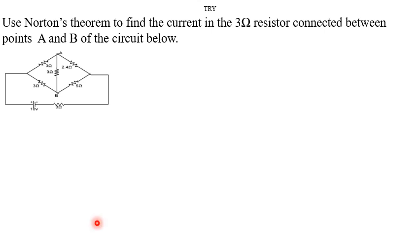Our question is saying we should use Norton's theorem to find the current through this 3 ohm resistor. To apply Norton's theorem, the first thing we do is take the resistor out of the circuit. After taking the resistor out, we just name the current flowing through it as IN.